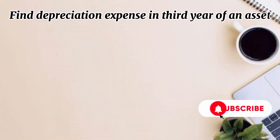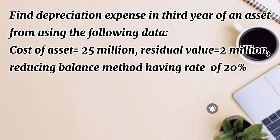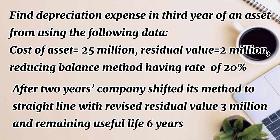Find the depreciation expense in the 3rd year of an asset using the following data: cost of asset 25 million, residual value 2 million, reducing balance method at a rate of 20%. After 2 years, the company shifted its method to straight line with a revised residual value of 3 million and remaining useful life of 6 years. For the first 2 years we use reducing balance method, and from the third year we apply straight line method.